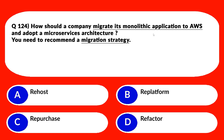This is a classic question type about microservices versus monolithic applications. Option A says 'Rehost' — rehost involves lifting and shifting the application to AWS without any changes to its architecture or code. This does not address the challenges of monolithic applications such as high coupling, low cohesion, and difficult maintenance. Therefore it's an incorrect choice. Option B says 'Replatform' — this involves making minor changes such as changing the database engine or operating system to optimize for the cloud.